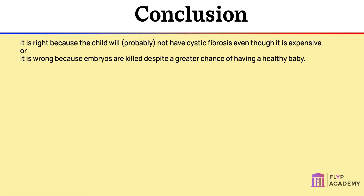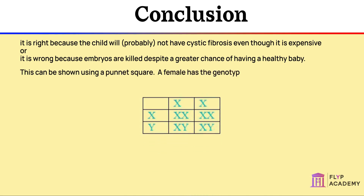The sex of a person is determined by the chromosomes inherited from their parents. Females inherit XX chromosomes and males XY. When an egg is fertilised by a sperm during sexual reproduction, all egg cells contain X chromosomes, while sperm contain either X or Y chromosomes — so it is the sperm that determines the sex of the baby. A Punnett square shows a female genotype of XX and a male of XY, giving a 50% chance of a boy or girl.